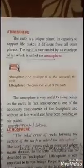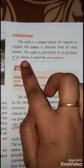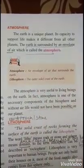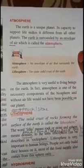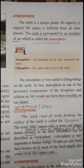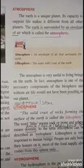In this video, we will be discussing about atmosphere and lithosphere. What is atmosphere? The Earth is a unique planet. Its capacity to support life makes it different from all other planets. The Earth is surrounded by an envelope of air which is called the atmosphere. It is an envelope surrounding our Earth which traps sunlight and also helps in the process of greenhouse effect. We will learn what greenhouse effect is in a separate class.